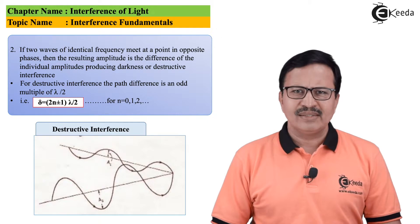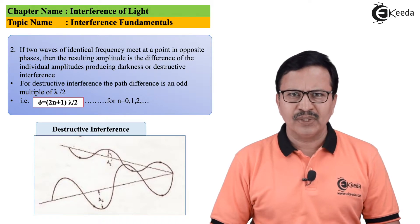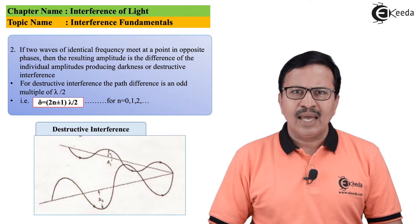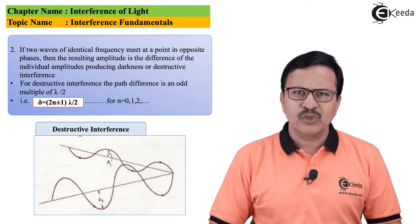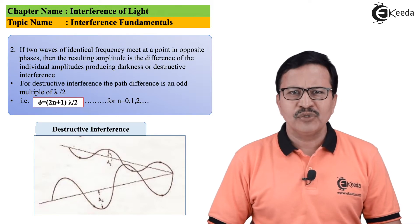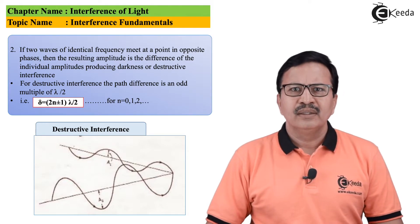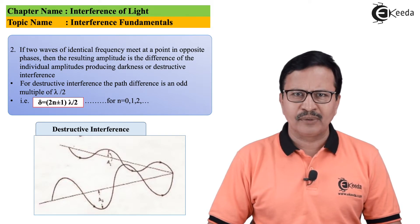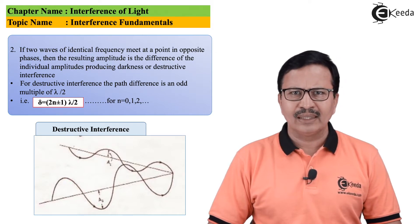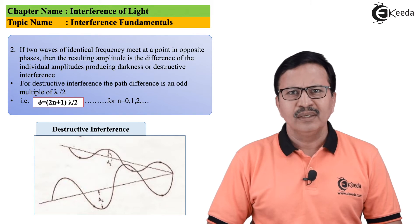It is not always that two waves are going to interfere in phase. It may also happen that the two light waves will interfere out of phase, and in that case the net amplitude is going to be the difference between the individual amplitudes. This will lead to darkness, or destructive interference. The path difference for destructive interference is an odd integral multiple of λ/2, represented by delta = (2n ± 1) × λ/2.